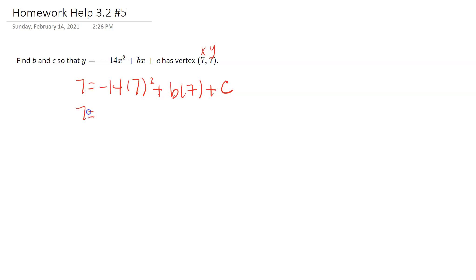So solving this out, we get 7 equals negative 14 times 49 plus 7b plus c. Using our calculator, we get 7 equals negative 686 plus 7b plus c. I'm going to add 686 over, so this yields 693 equals 7b plus c.